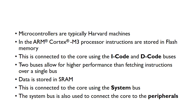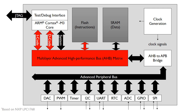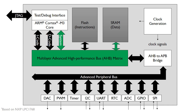The system bus is also used to connect the core to the peripherals. Looking at the microcontroller architecture diagram, the core is connected to the flash memory over the I-Code and D-Code buses, and all the buses share this bus matrix — the multi-layer advanced high-performance bus matrix. The flash is connected to the core via the I-Code and D-Code buses, and the SRAM data goes over the system bus. These are two separate buses, which is characteristic of the Harvard architecture.